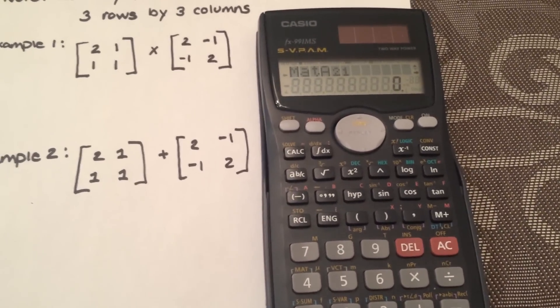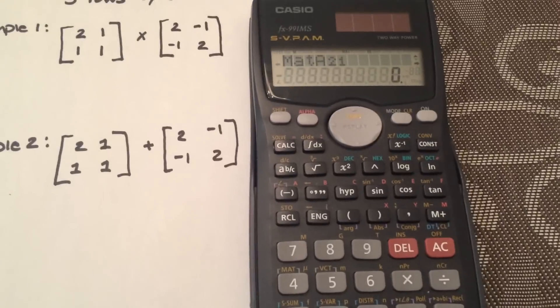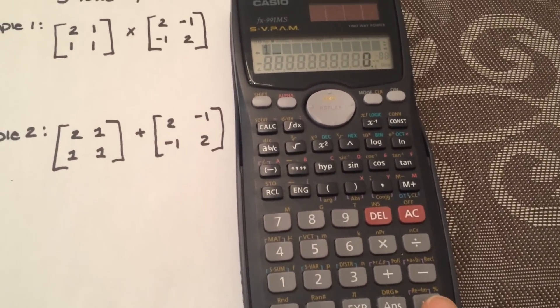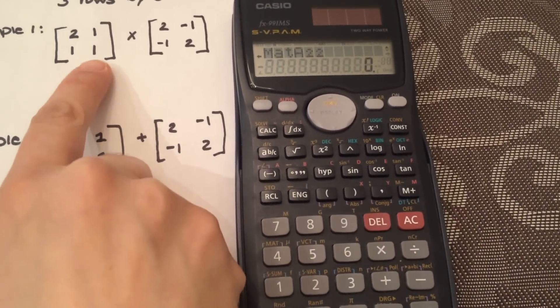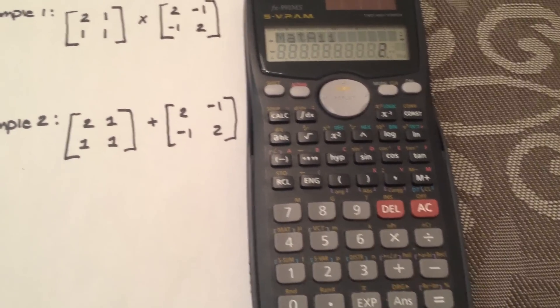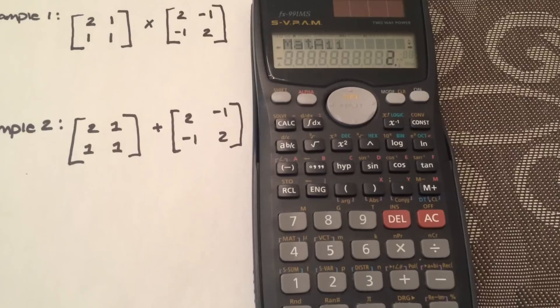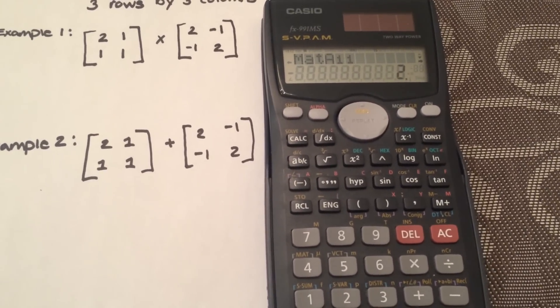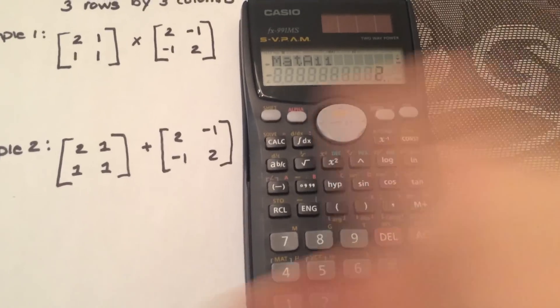And now it's asking for A21, which is 1. Select 1. Then it's asking for A22, which is also 1. So that's A. You've entered the information into your first matrix A.